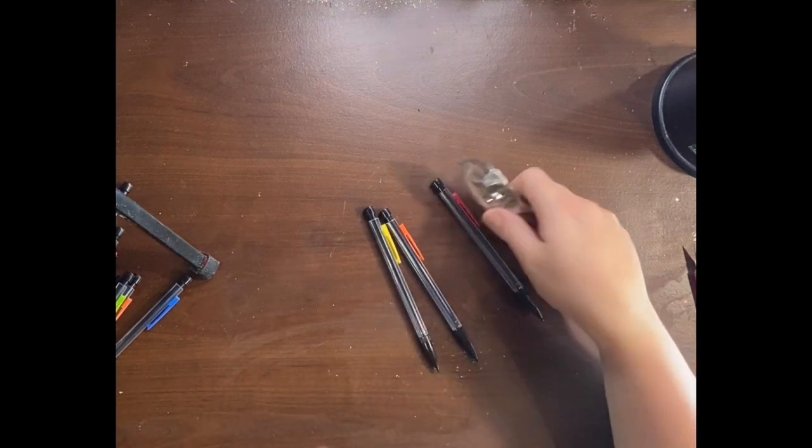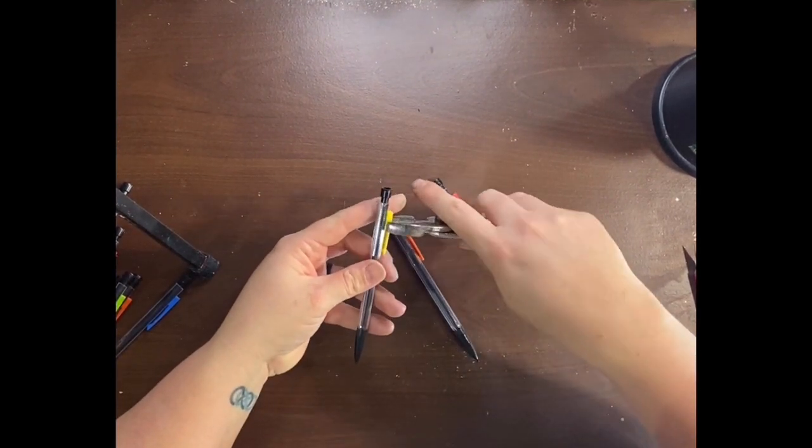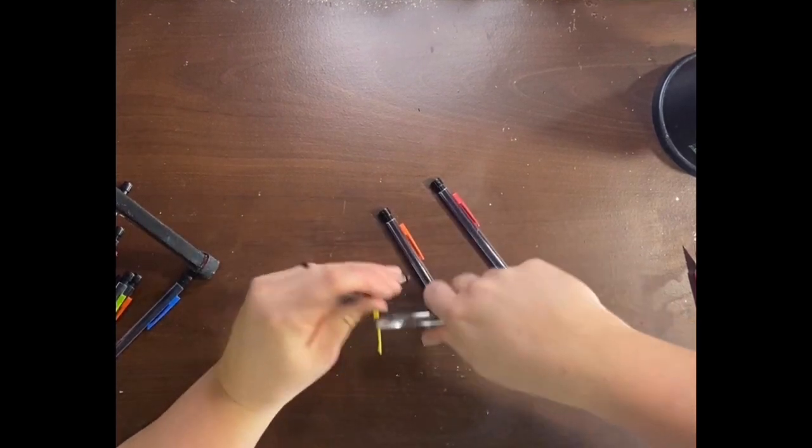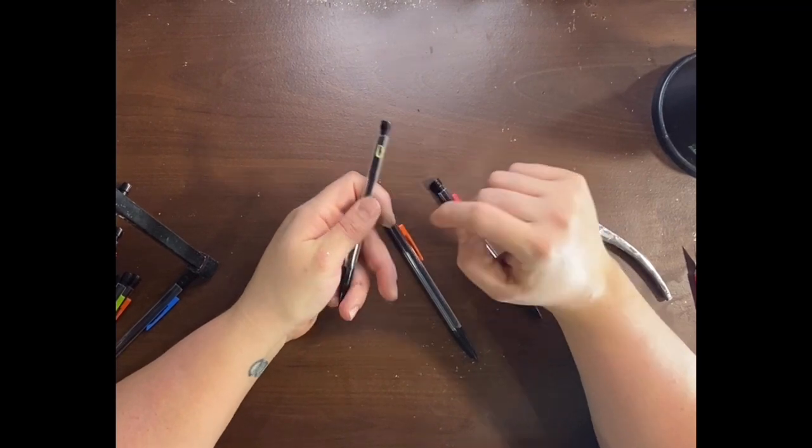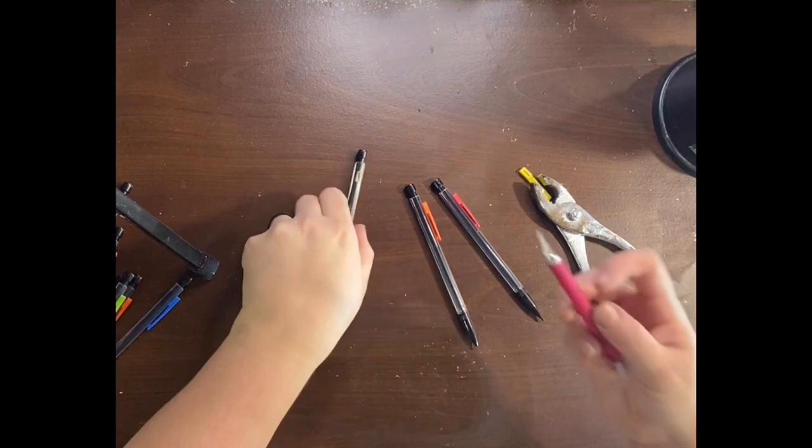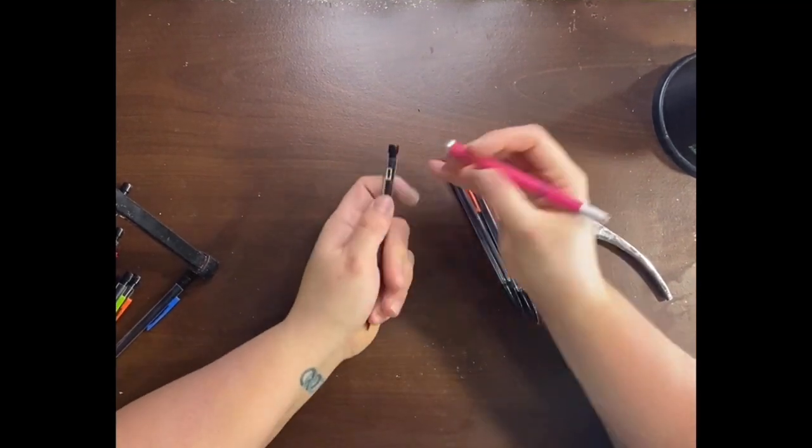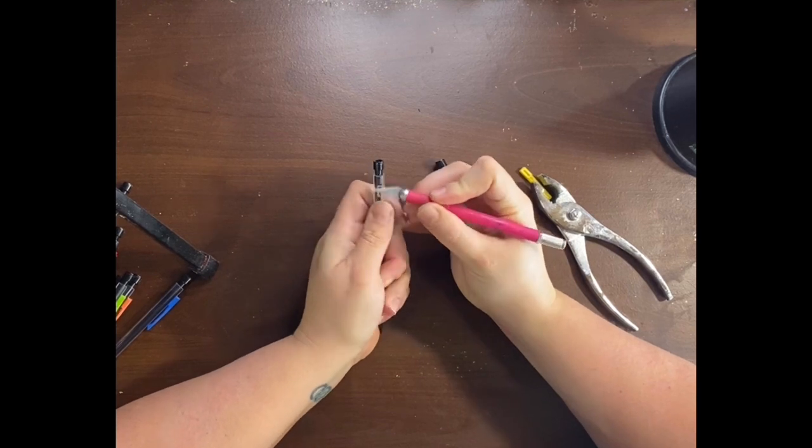So I take a pair of pliers and I grab a hold of that clip and kind of twist. You need to be kind of gentle with this. This can crack your pencil. I'll show you in a minute where you took off that clip is going to have a slight ridge. I just take a sharp craft knife and kind of cut that away.